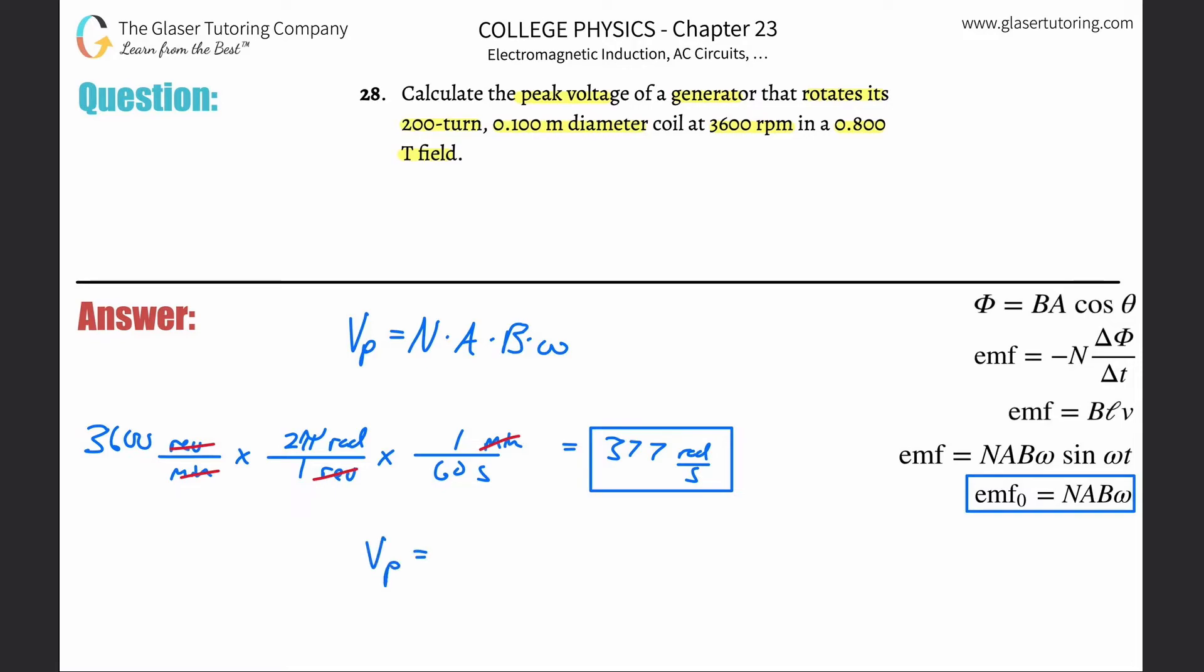Now we just plug everything in. 200 turns, the area is π r squared - we know the diameter, so divide by 2. That's 0.05 squared. Then multiply by the magnetic field, 0.8, and the angular velocity, 377.